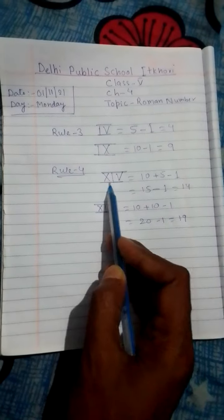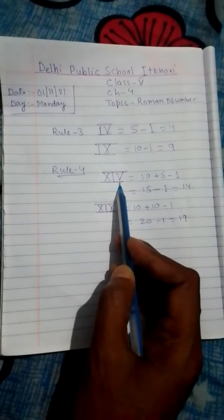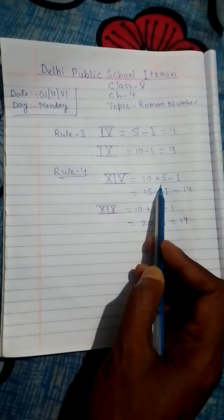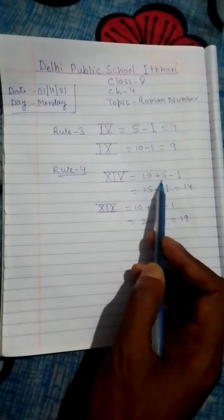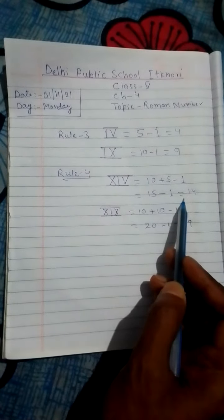Now for XIV: 10 is written and for V, and plus 5 has written. Now for I, minus 1. So 10 plus 5 minus 1 is 14.